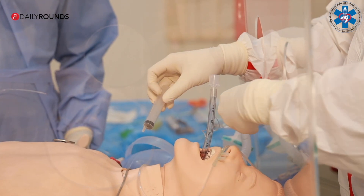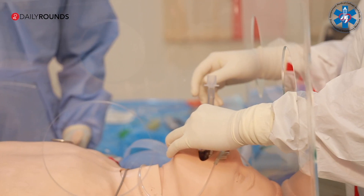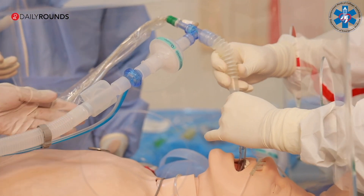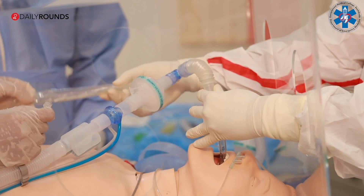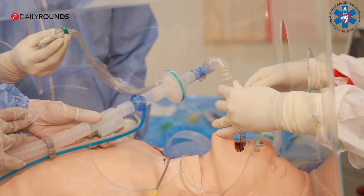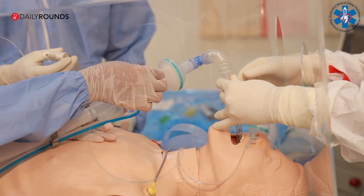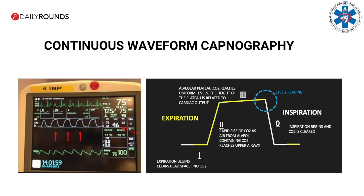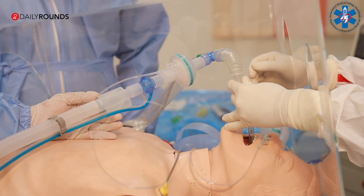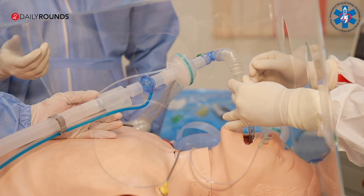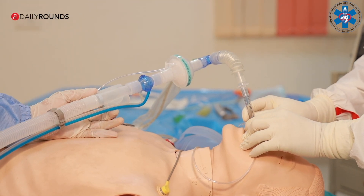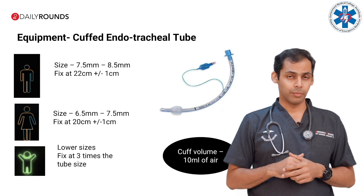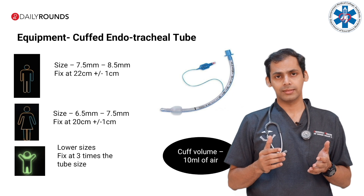If a standalone mechanical ventilator or transport ventilator is immediately available, connect the ET tube with the viral filter to the ventilator and avoid using a manual resuscitator or ambu bag. A closed suction should be pre-connected to the ventilator circuit if available. Continuous waveform capnography is recommended to confirm tracheal tube position. Bedside ultrasound may also be used. Exclude bronchial intubation by five-point auscultation or chest X-ray. The ET tube should be fixed at about 20–21 cm in females and about 23 cm in males.